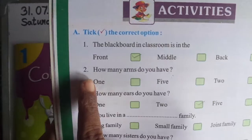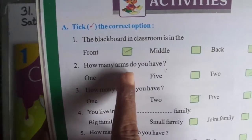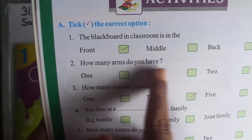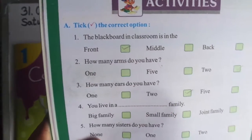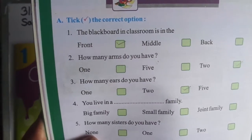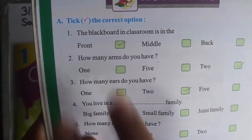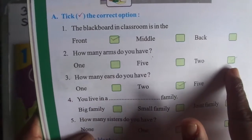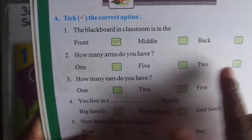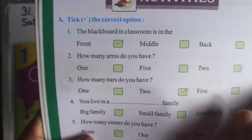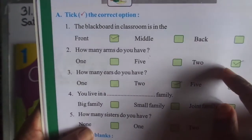Number 2. How many arms do you have? 1, 5, or 2. See, 3 options are here. So, answer is 2.